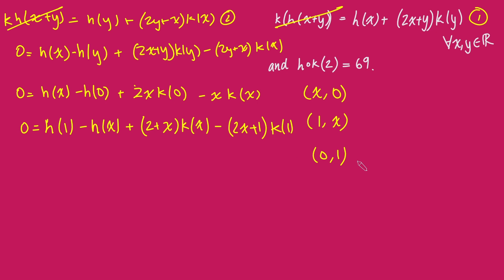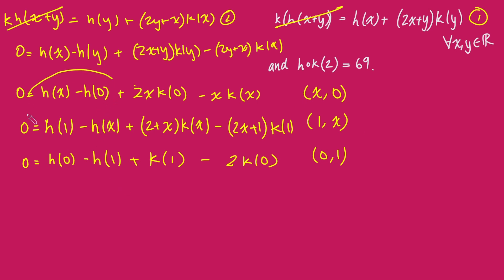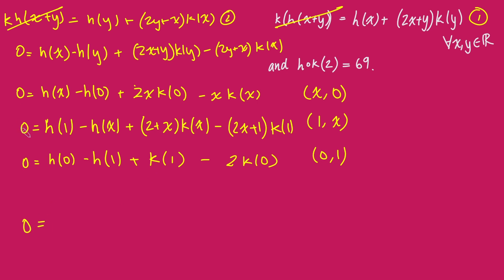Finally, substituting x equals 0 and y equals 1: 0 equals h of 0 minus h of 1, plus k of 1, minus 2 times k of 0. Now if we add up these three equations, the left-hand side is 0. On the right-hand side, h of x minus h of x cancels, h of 1 minus h of 1 cancels, and h of 0 minus h of 0 cancels — all the h's disappear. There's still more simplification: the k(1) terms cancel, and the x times k(x) terms cancel.